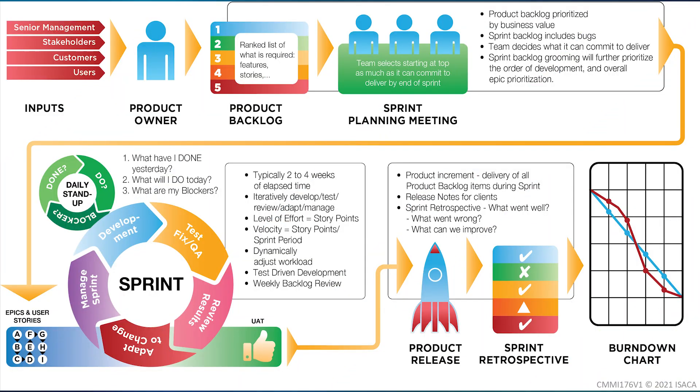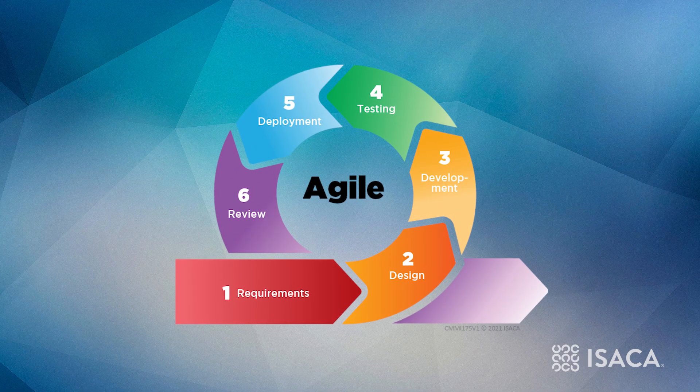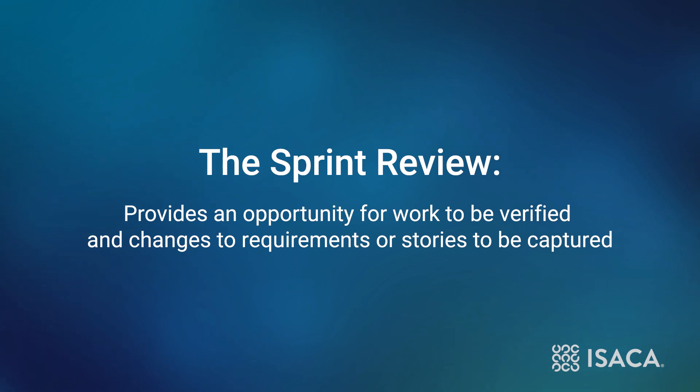The final example connects requirements and testing. At the end of a sprint activity, the Agile product development team will conduct a sprint review or sprint demo. This activity provides customers, product owners, and other stakeholders the opportunity to review what the Agile team has accomplished during the sprint and to hopefully accept the work. If stakeholders do not accept the work, the Agile team will gather feedback and ask what changes are needed. The sprint review provides an opportunity for work to be verified and changes to requirements or stories to be captured. It also allows for new requirements or stories to be added, and the Agile team will update the product backlog accordingly.